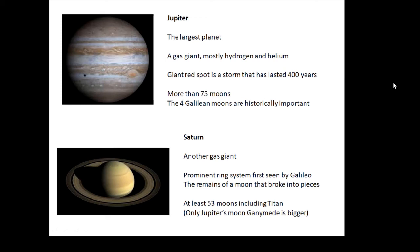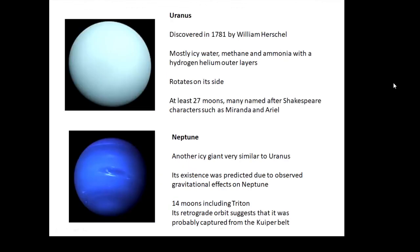Uranus—now this is the first planet to be discovered. The other planets people have known about for thousands of years. Uranus was discovered by William Herschel in 1781 with a telescope that he built. It's mostly icy water, methane, and ammonia.